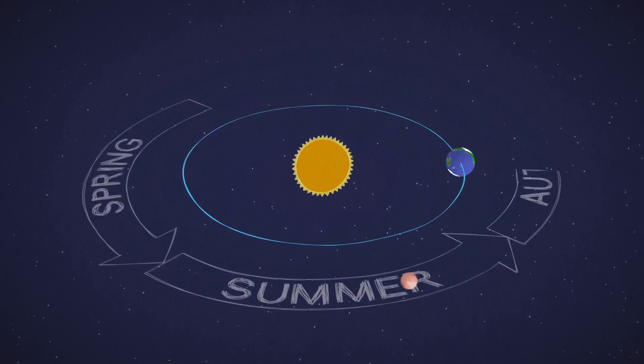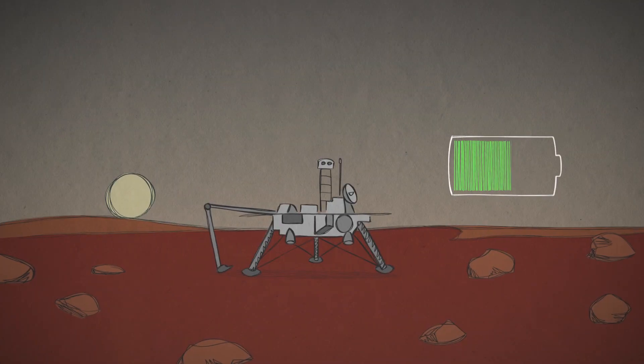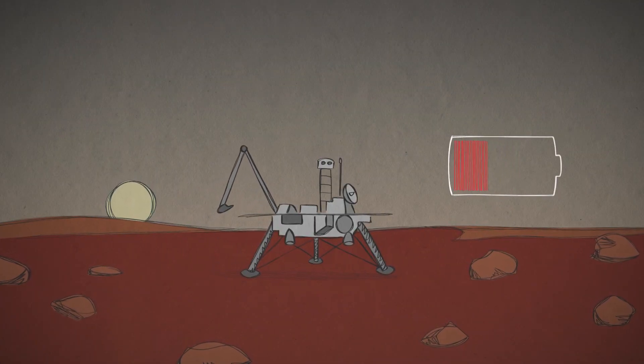That longer year means longer seasons, too. Over extended Martian winters, the shorter days and reduced sunlight mean that solar-powered spacecraft sometimes have to carefully conserve their energy.